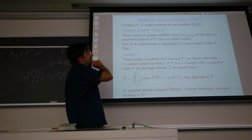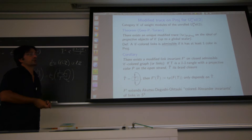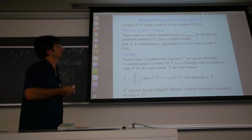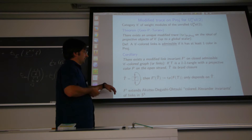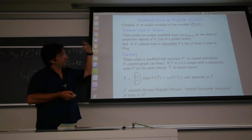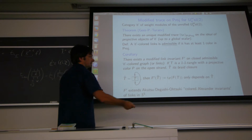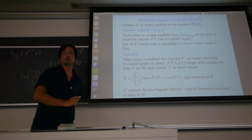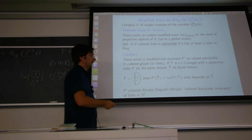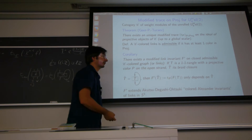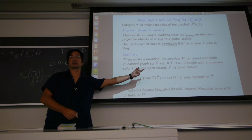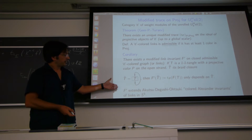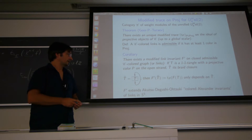We say a C-colored link is admissible if it has at least one color which is a projective object. The graphical equivalent of the modified trace is the non-vanishing invariant F'. For a closed admissible graph, we cut along an edge colored by a projective object to get an endomorphism of the projective, then take the modified trace. The theorem is that the result only depends on the closed graph, not on where you cut.